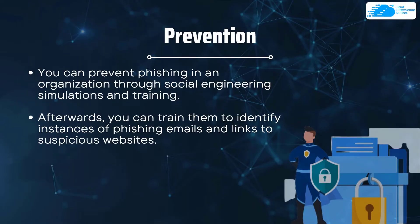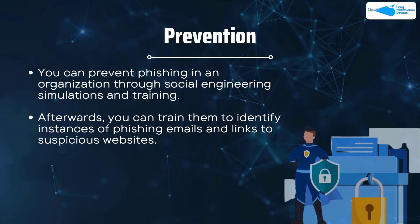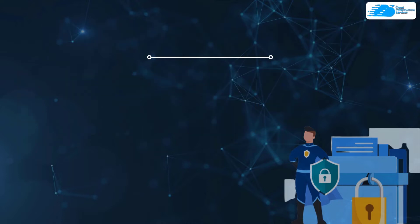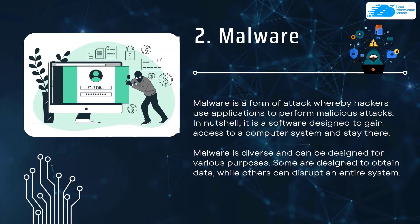To prevent phishing in an organization, you can use social engineering simulations and training. You send out simulated phishing attacks to your employees and then train them to identify phishing emails and links to suspicious websites. Number two on our list is malware.